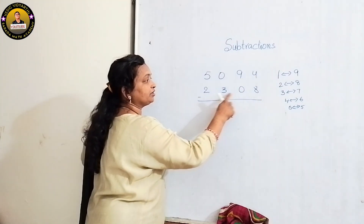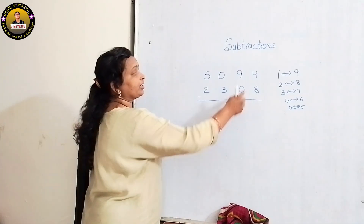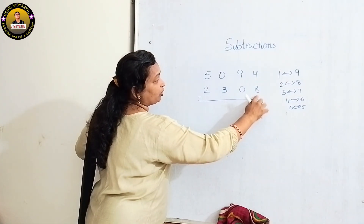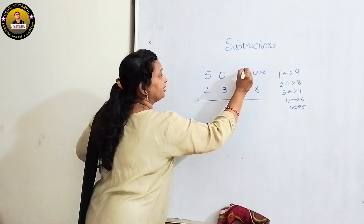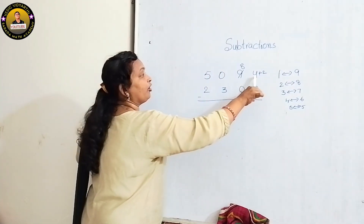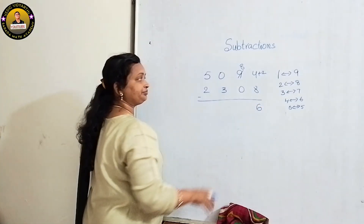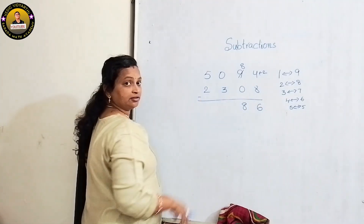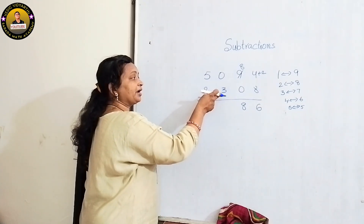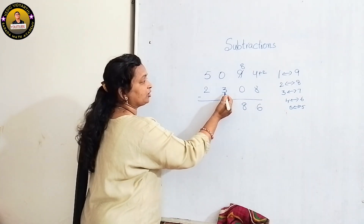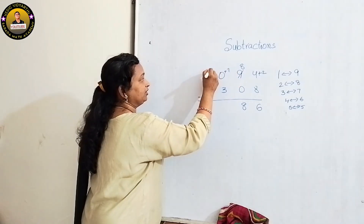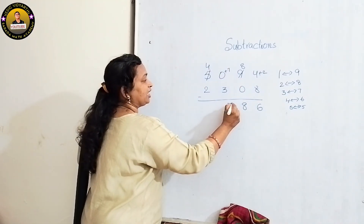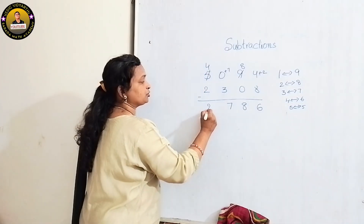5094 minus 2308. We can't subtract 4 minus 8, so add the complement of 8, which is 2. Decrease 1 from 9 — so 4 plus 2 is 6. Next: 8 minus 0 is 8. Then we can't subtract 3 from 0, so write the complement of 3, which is 7. Decrease 1 and 0 plus 7 is 7. Then 4 minus 2 is 2. Final answer is 2786.